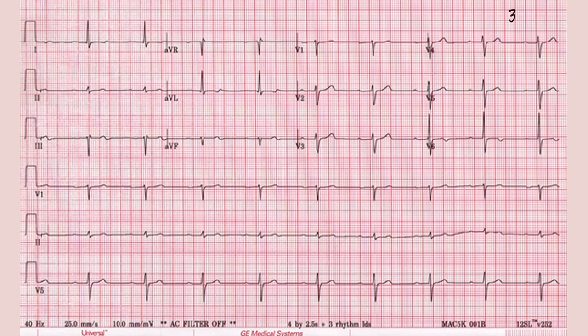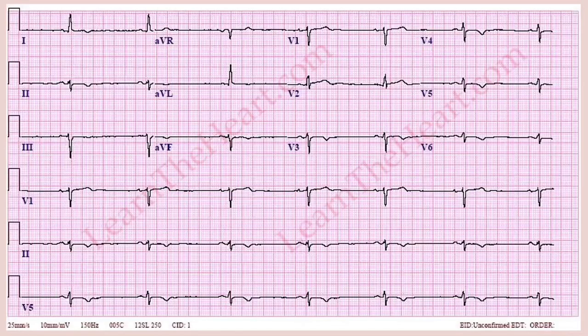Remember the formula: 300 divided by the number of big boxes between QRS complexes. Here we have about five and a half boxes — 300 divided by five is 60, so anything below that is bradycardia. More than five big boxes between QRS complexes means you're dealing with a bradycardia, but everything else here is essentially normal.